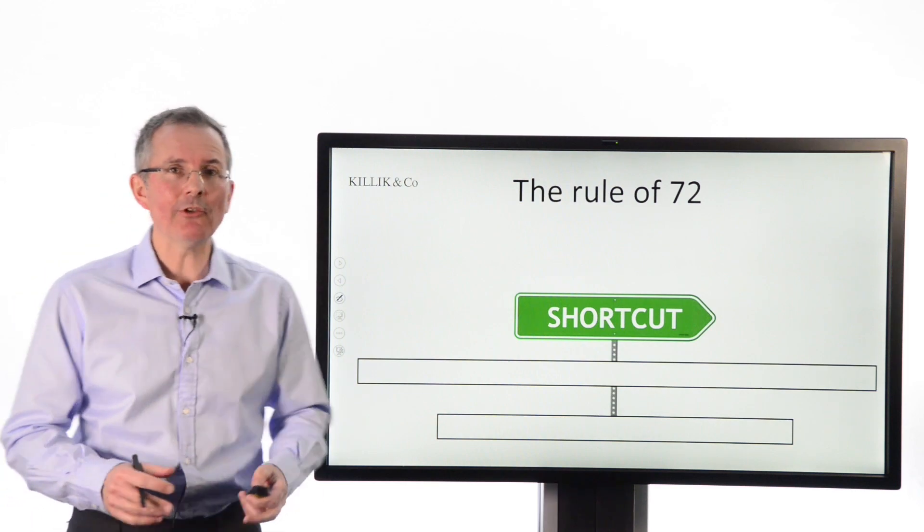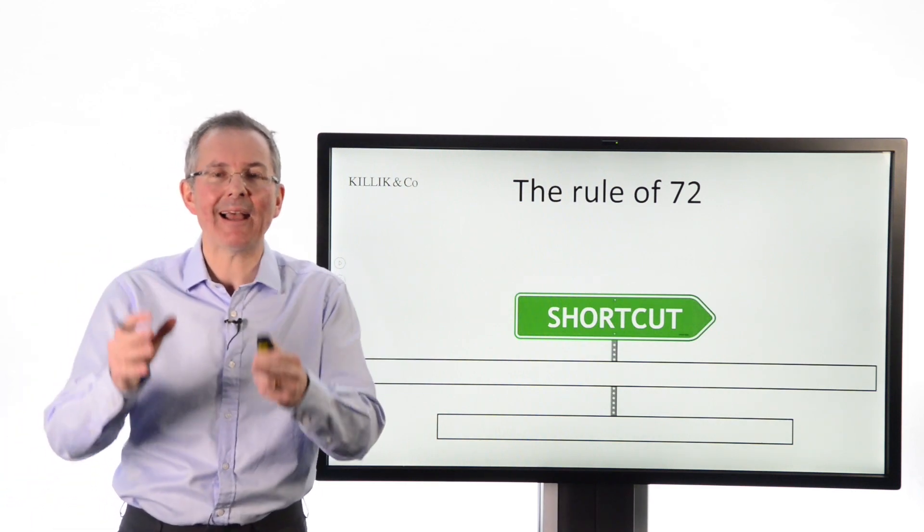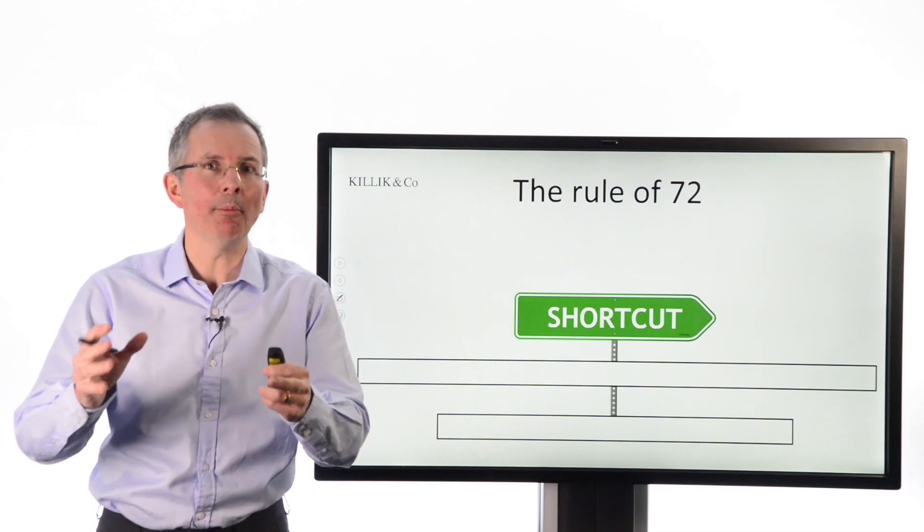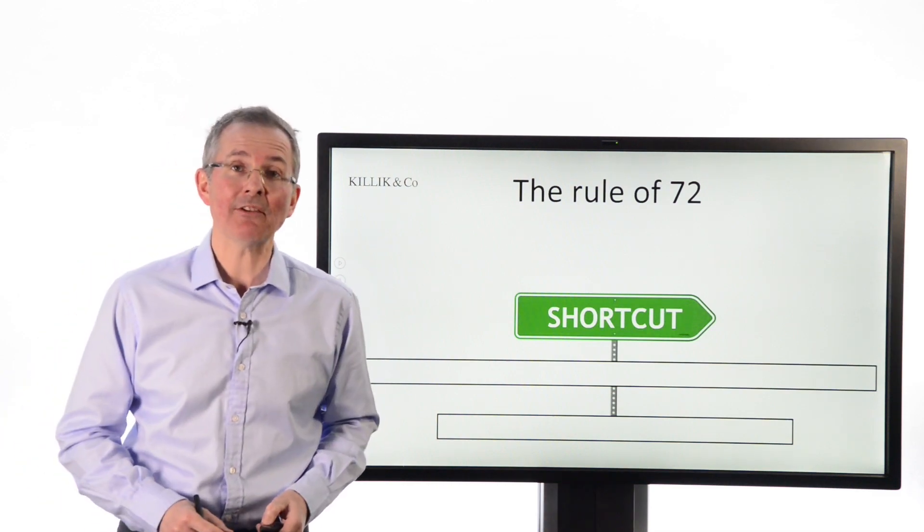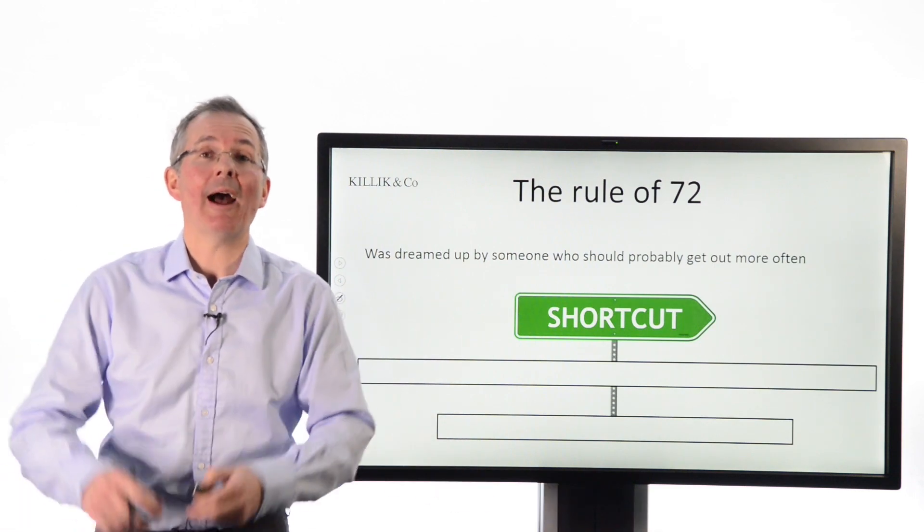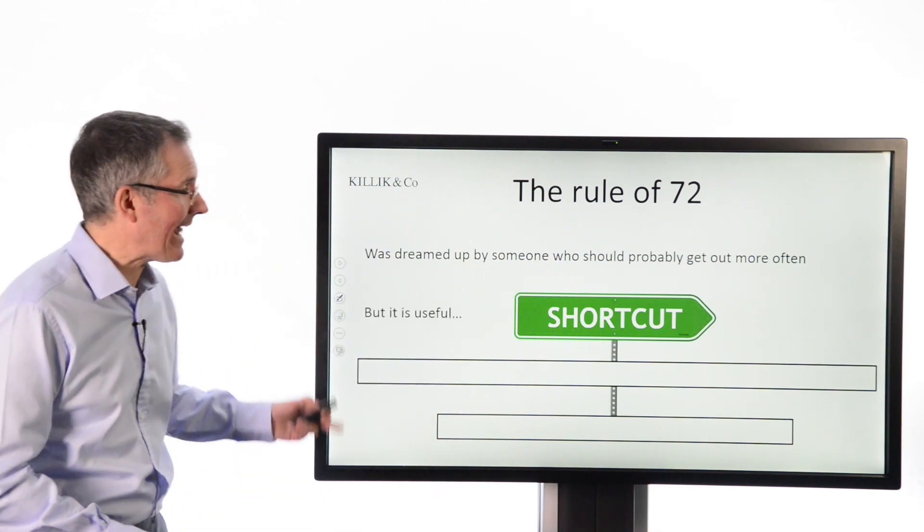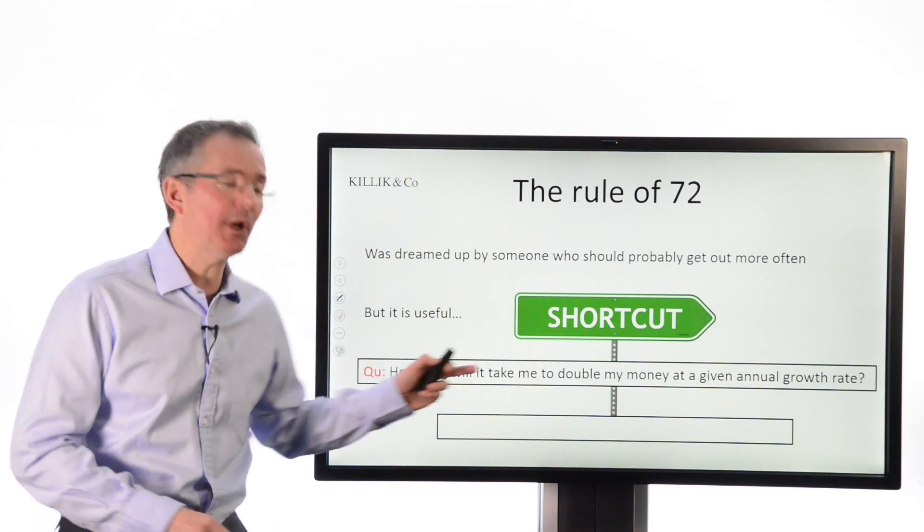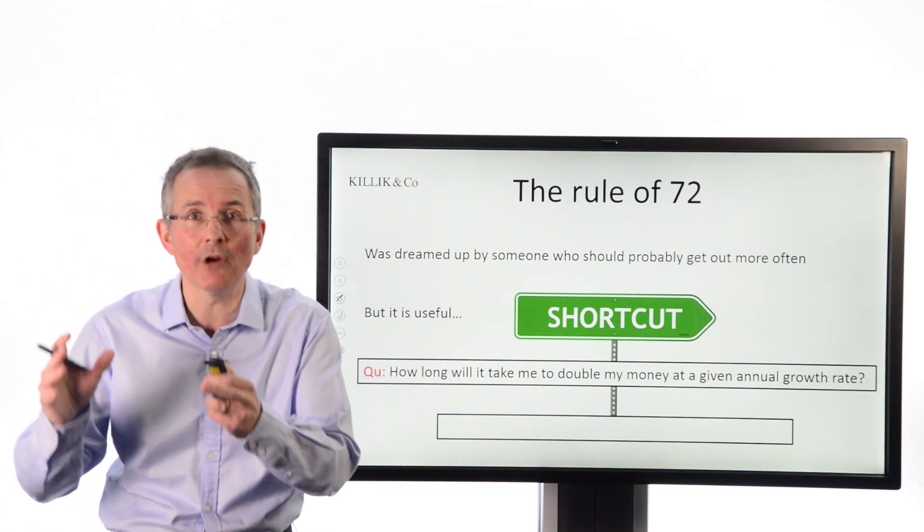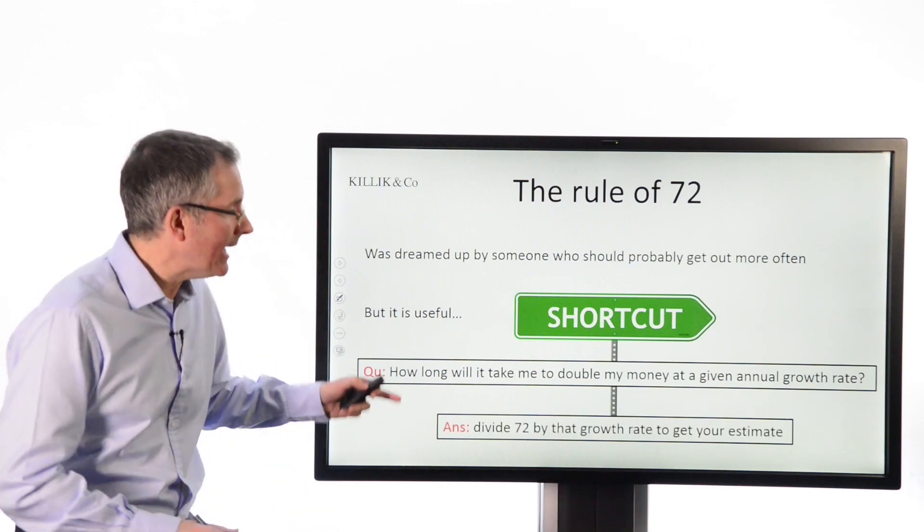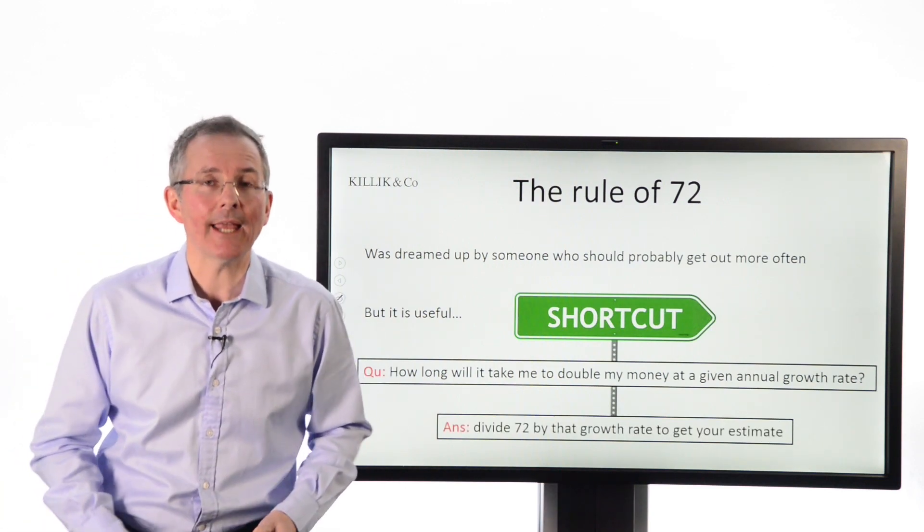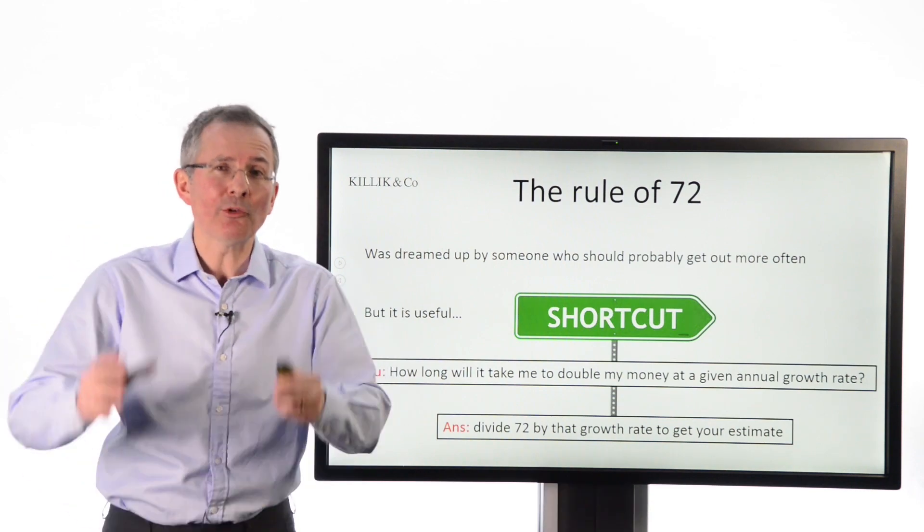Now, the rule of 72 is a really convenient back-of-an-envelope shortcut to explain how fast you're going to double your money without lots of complex maths. It was dreamed up by somebody who probably should have gone out more often, but it's very useful. And it basically says, if you want to know the answer to the question, how long will it take me to double my money at a given annual growth rate, it gives you the answer without having to go to a spreadsheet or use a complex calculator or use any mathematical formulae.